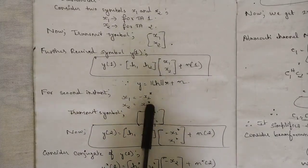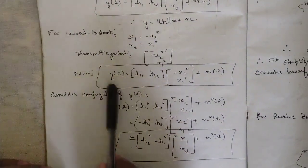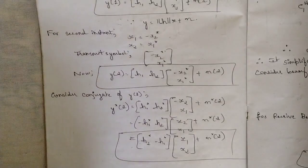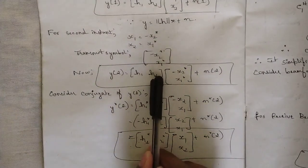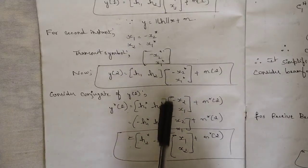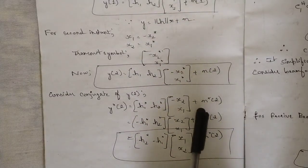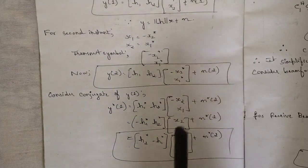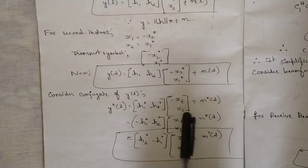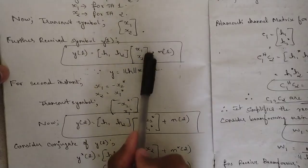Now consider a new transmit symbol as minus X two conjugate and X one conjugate. Y of two would be H one H two into this matrix plus N of two. Now consider the conjugate of Y of two as Y star two. Whatever Y of two condition we got with respect to the MIMO receiver, we take its conjugate Y star of two. After taking the conjugate, whatever H two elements are there, you take their conjugate - that is H one star and H two star. Since we already have conjugates, taking further conjugate would be inversely proportional and they cancel each other. We remain with only minus X two and X one plus N star two.